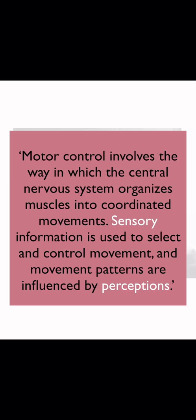Sensory information — all types — is used to select and control movement, and the key word there is select. That's your brain. Movement patterns are influenced by perceptions, and perceptions are key because that's your brain. Your brain will take in the sensory input delivered to it, consciously and subconsciously, and then it goes through your life history, how you interpret the world and things that have happened to you up to that point. And then that determines, after your perception, how you are going to move or control movement. That's why you can give the same sensory input to two different people and they have a completely different outcome — because the mode of control is determined by the perceptions.